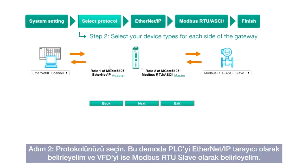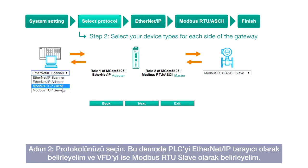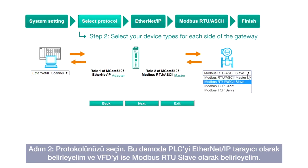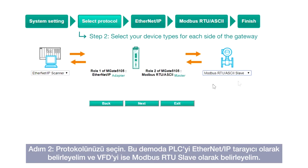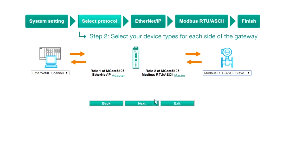Step 2: Select Protocol. In this demo, the PLC should be set as an EtherNet/IP scanner and the VFD as a Modbus RTU slave. Click Next to continue.